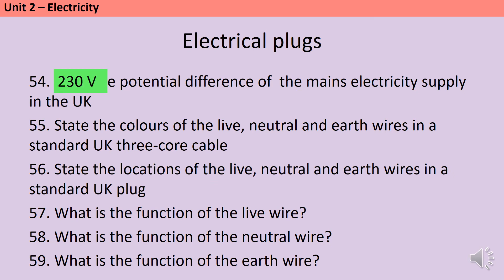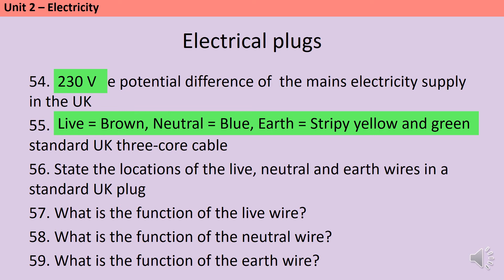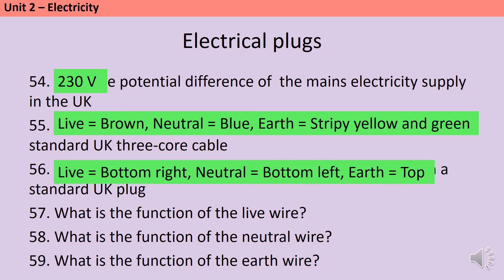The live wire in Britain is brown, the neutral wire is blue, and the earth wire is yellow and green stripes. The live wire is on the bottom right like BR for brown, the neutral wire is on the bottom left as in BL for blue, and the earth wire is at the top or in the middle.